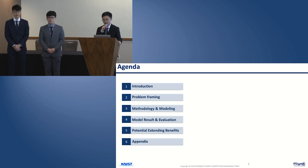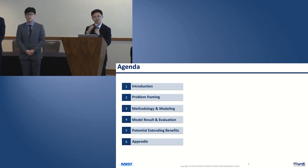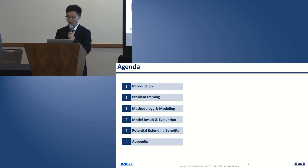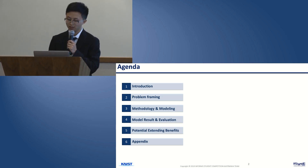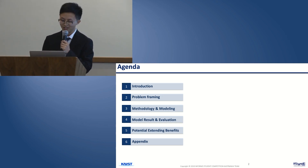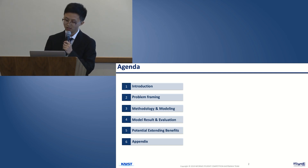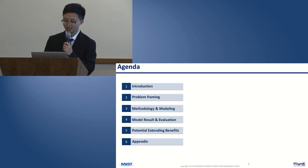This is what we are going through in this presentation. We are talking about how we understand and frame this problem, how we build our model, and how our model performs on the problem data set. We provide some interesting insights on how AV influences the vehicle delivery process, and we also consider some potential extending benefits that our model can provide if it can be further developed to meet the information needs of different stakeholders. We have also prepared some supplementary materials in case you have questions.